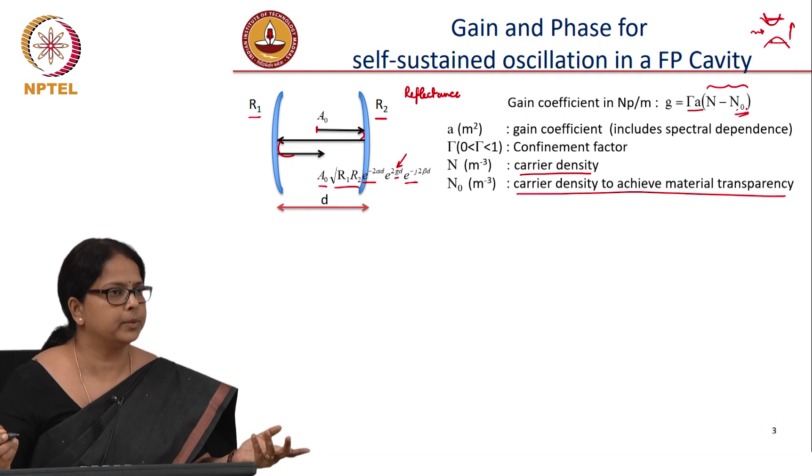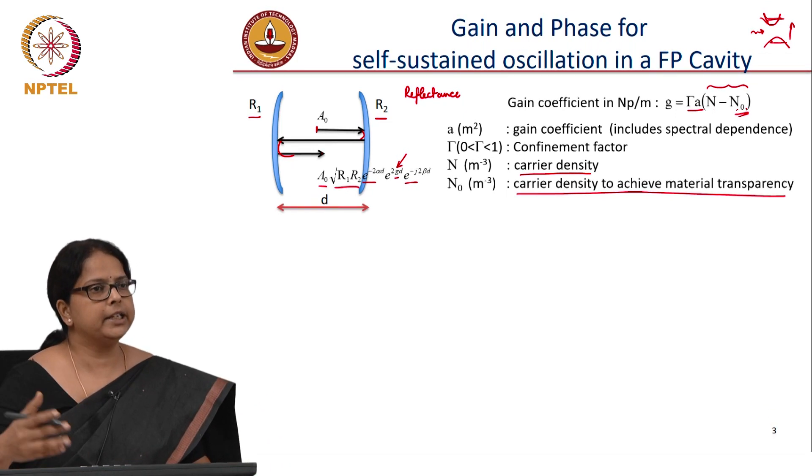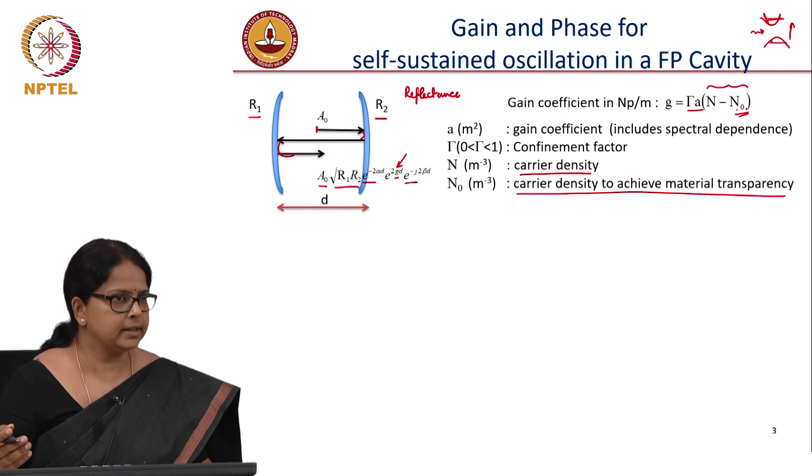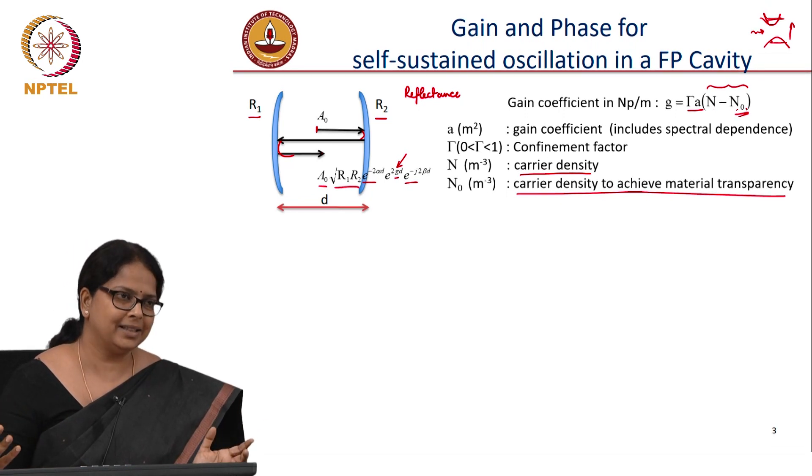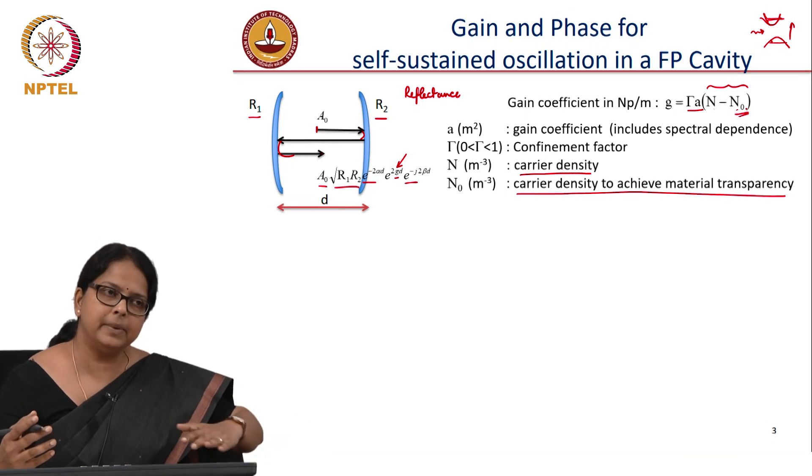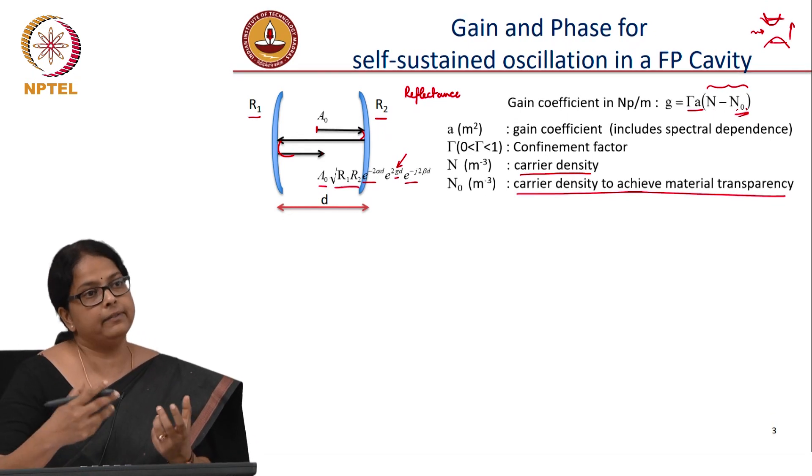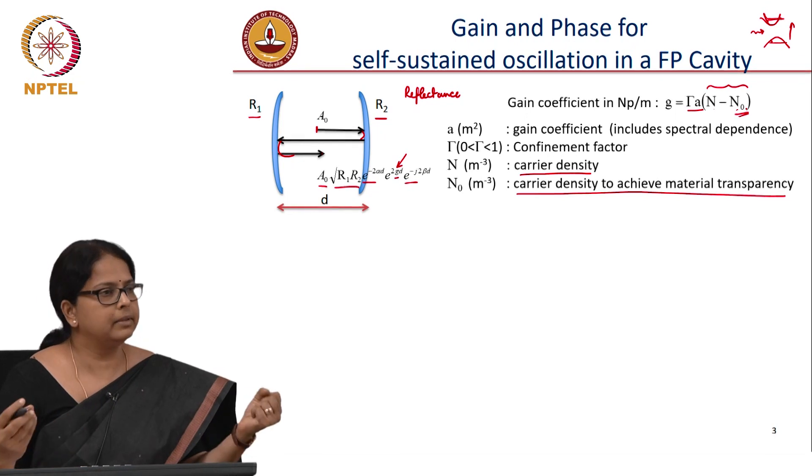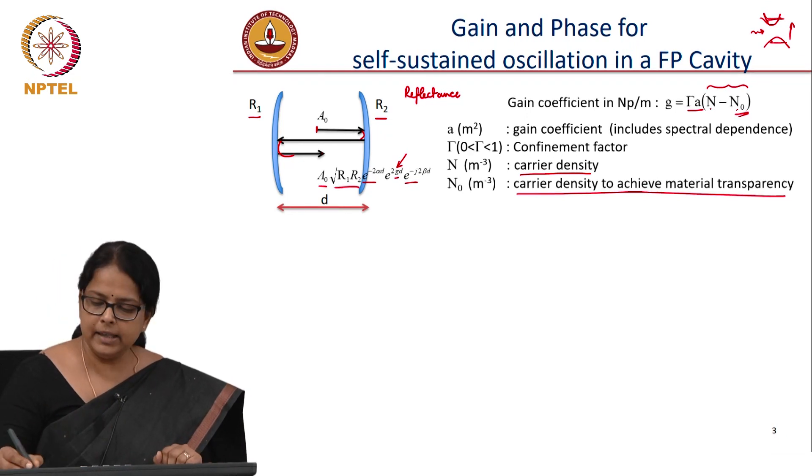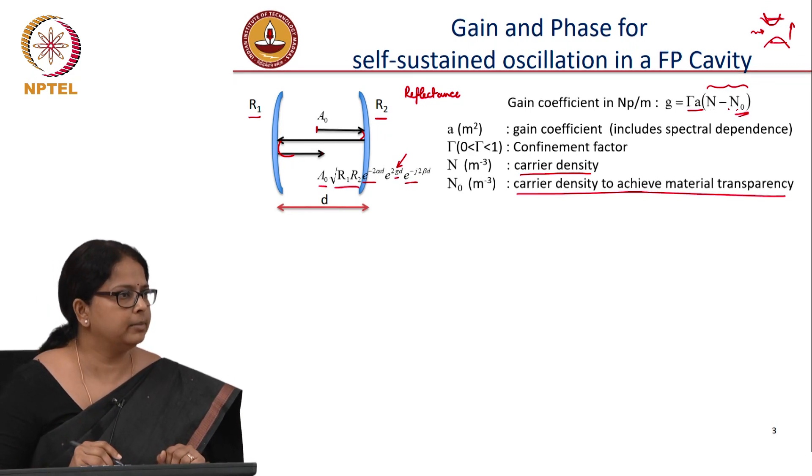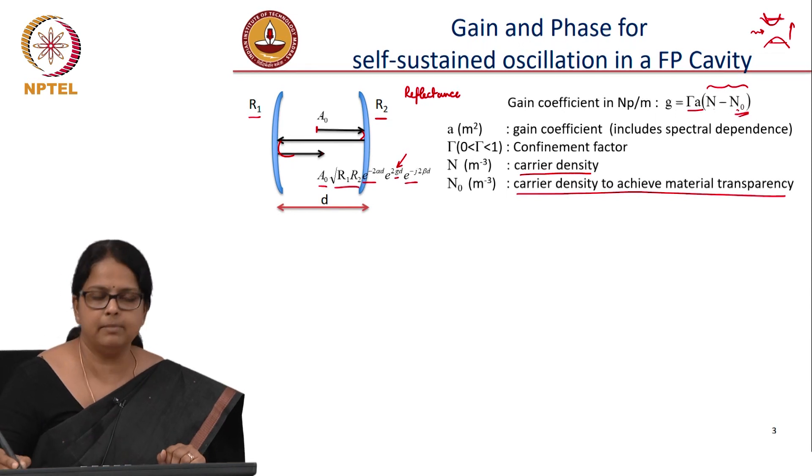The carrier density required for no absorption condition. So as you keep on injecting more and more carriers, more carrier density is present in the system and there is a certain amount of carrier density that is required to compensate for the absorption in the system. And that carrier density is not available to you for creating stimulated emission. Only the excess is available for creating stimulated emission and that is why you have this N minus N naught.